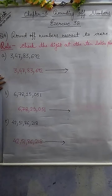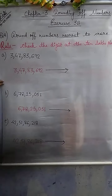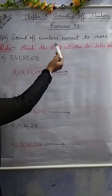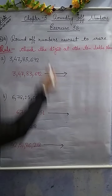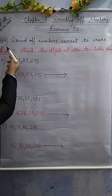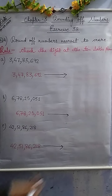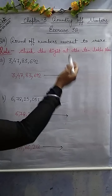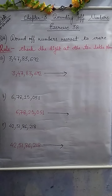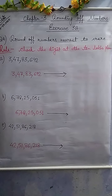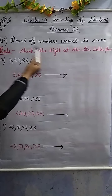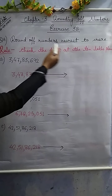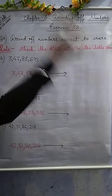Good morning students. In chapter 3, rounding of numbers, today we learnt about how to round off numbers nearest to crore. That is your exercise 3B, question number 4. In the previous video, we found round off numbers nearest to 10 lakh. So students, you have to do many questions related to rounding off numbers, finding round off numbers nearest to different places.